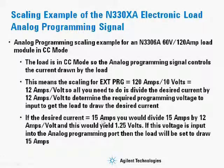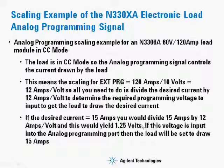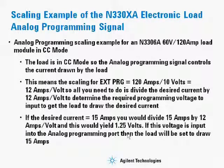If the desired current was 15 amps, you would divide 15 amps by 12 amps per volt, which yields 1.25 volts. This voltage is input into the analog programming port and the load will be set to draw 15 amps. I hope this has been helpful in showing how to use the monitor and programming ports located on the rear terminals of the electronic load family.